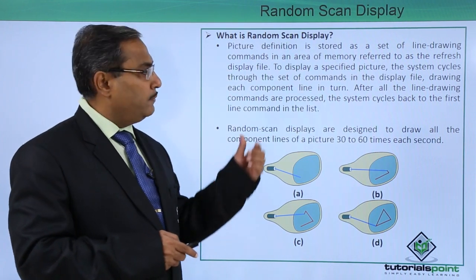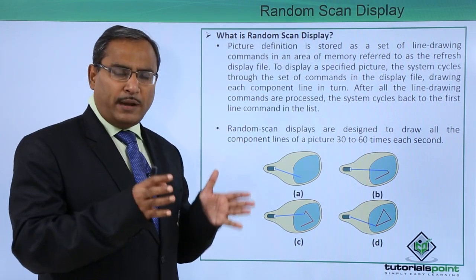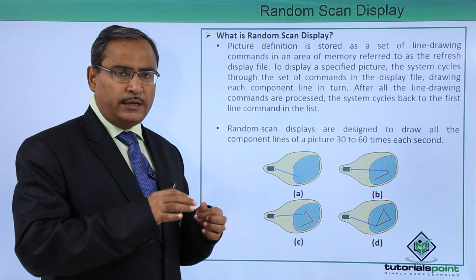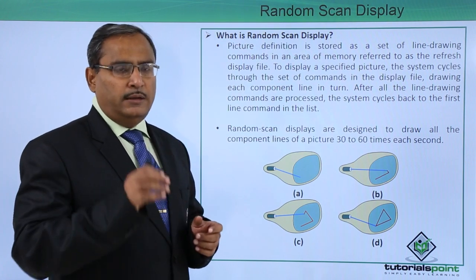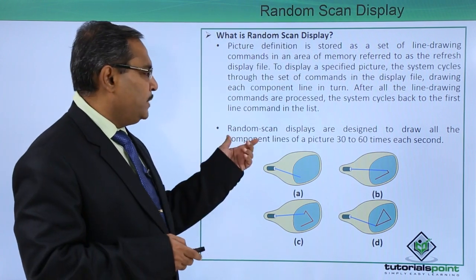the system cycles back to the first line command in the list so that the image can be redrawn. Here we are having a set of commands and all those commands will be executed. Executing those commands means we are drawing the respective diagrams accordingly.